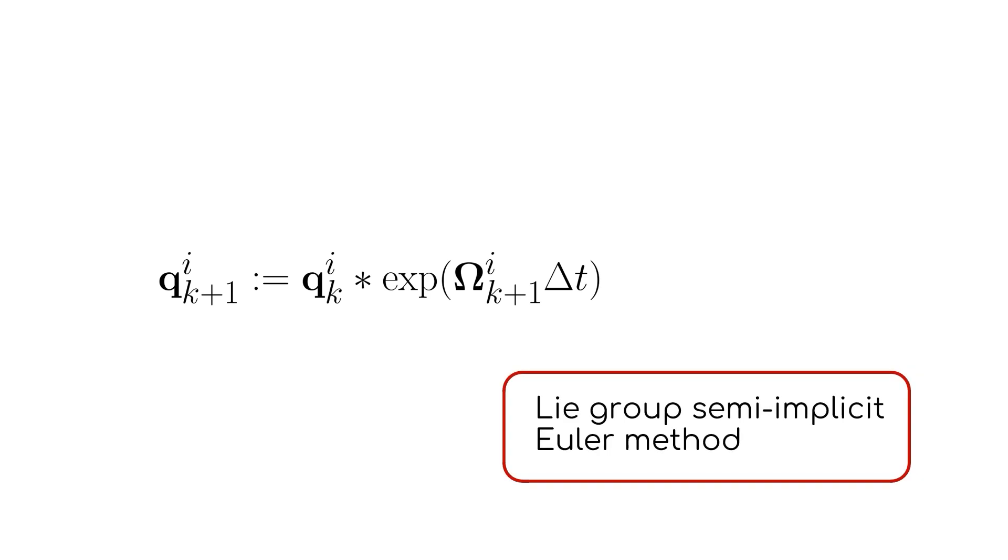To efficiently represent arbitrary orientations of the manipulated object, we parameterize rotations using unit quaternions. Given an orientation sampled at time step k, we employ a Lie group time stepping scheme to discretize the continuous time system dynamics and compute the orientation at time step k plus one.